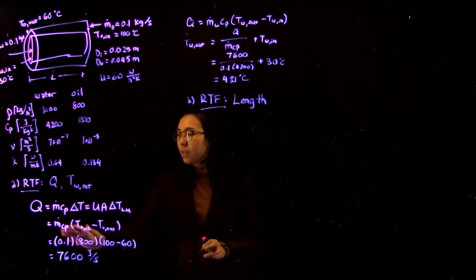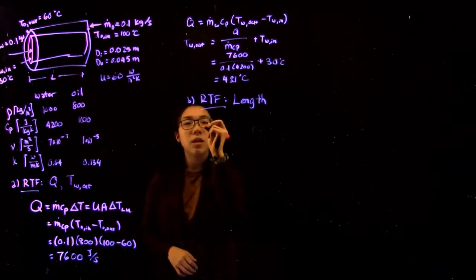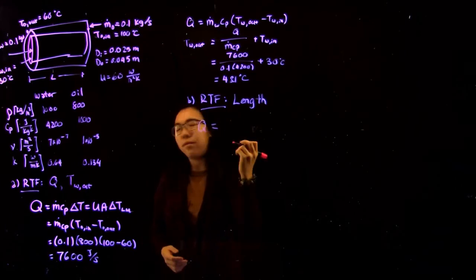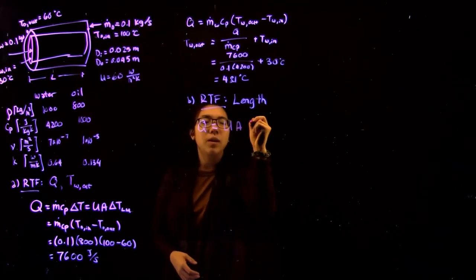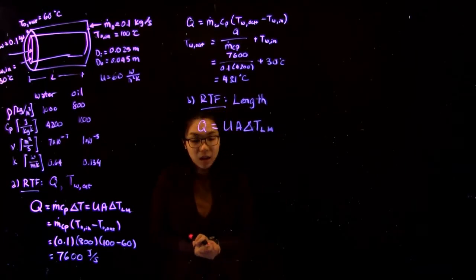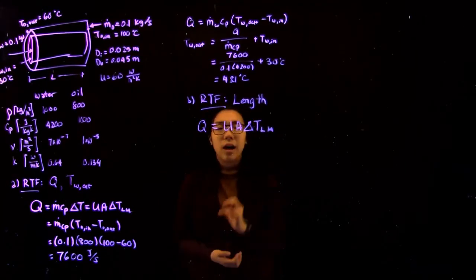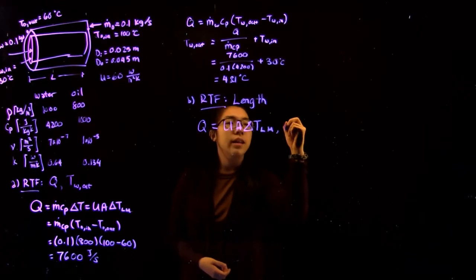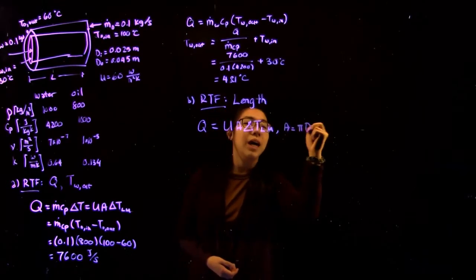So in that case, we can basically write the second part of this equation, which says that Q, again a value we have, equals UA times delta T log mean, where the area is simply equal to pi DL.